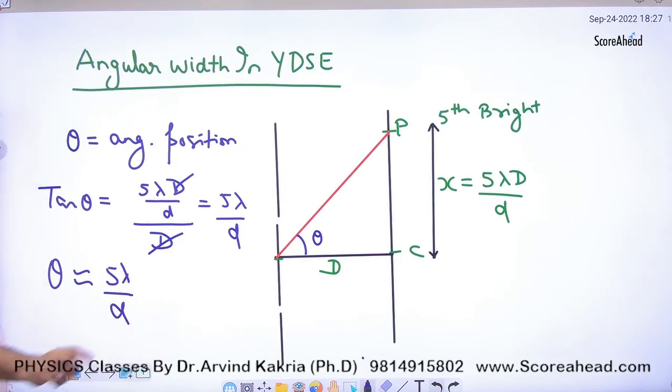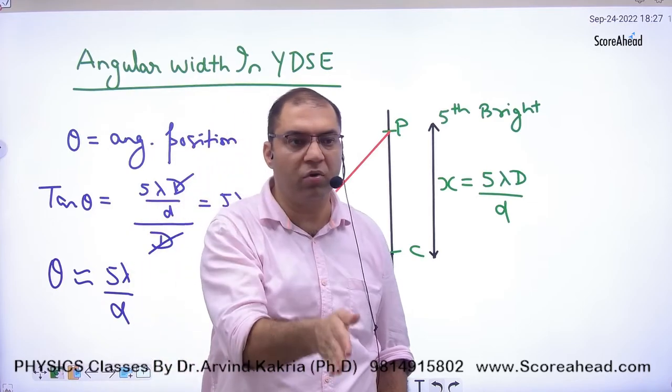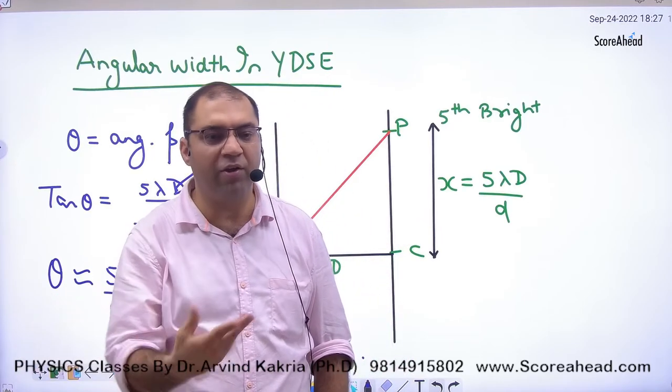And when angles are small then tan theta approximately can be written as theta. So angular width theta, this is what will happen in radians. Okay? So if you think that any position is given, that position will be divided by capital D.